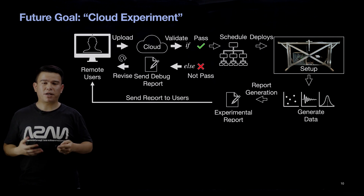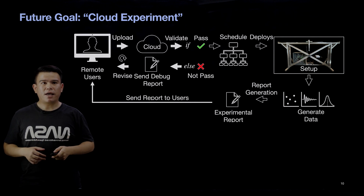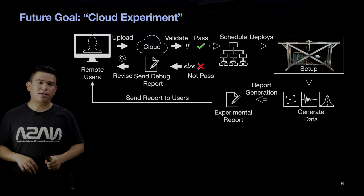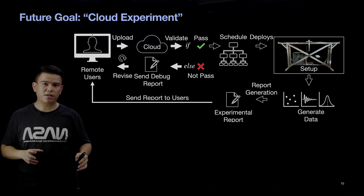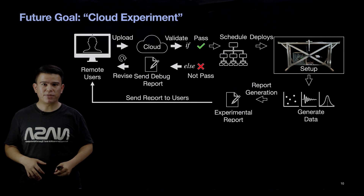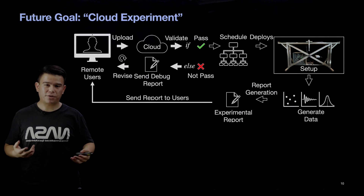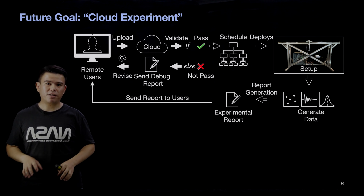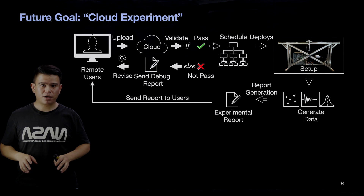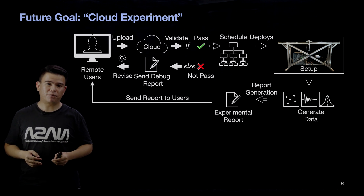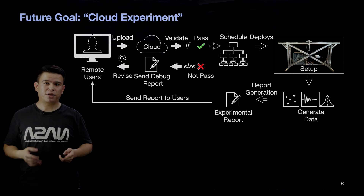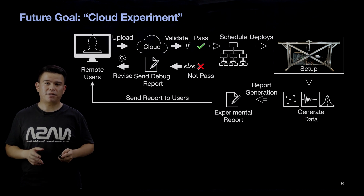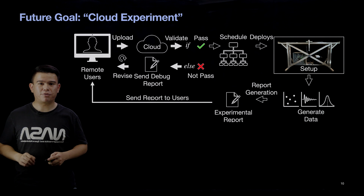If your code doesn't work, we can also send you a debug report so that you can revise your code. By using this cloud experimentation idea, users do not have to worry about building and maintaining an experimental system anymore — you just use it via the cloud. We believe this idea will make our system more widely available to many users, and we would like to implement it as our future research goal.